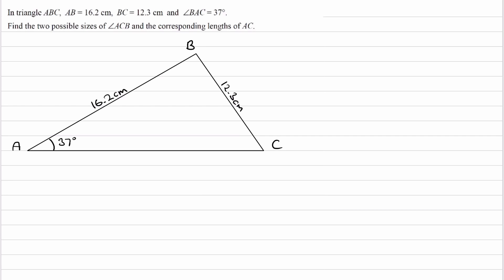In triangle ABC, AB is equal to 16.2, BC is equal to 12.3, and angle BAC is equal to 37 degrees. We're trying to find the two possible sizes of angle ACB and the corresponding lengths of AC.